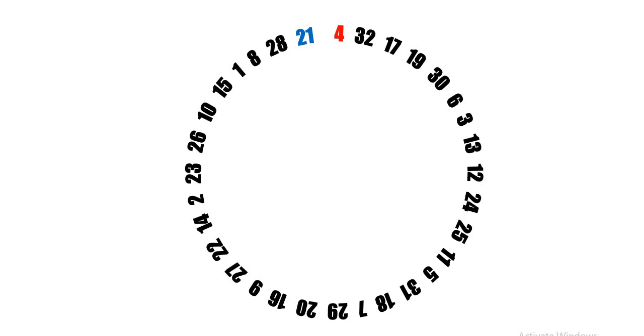Now, in this circle of numbers, if we consider any two consecutive number, for example, 21 and 4, this is equal to 25. 4 plus 32, that is equal to 36. 32 plus 17, that is equal to 49. 6 plus 3, that is equal to 9. 3 plus 13, that is equal to 16.